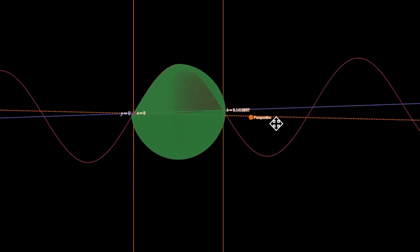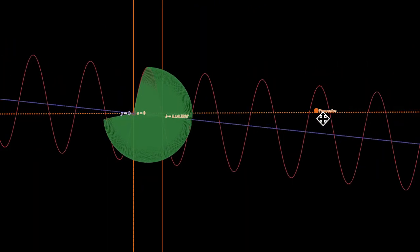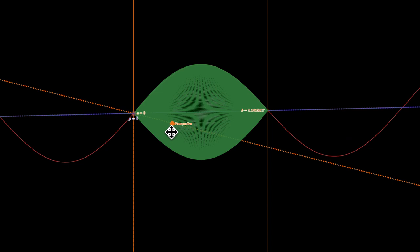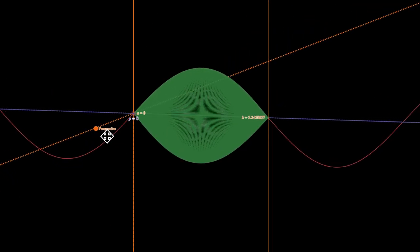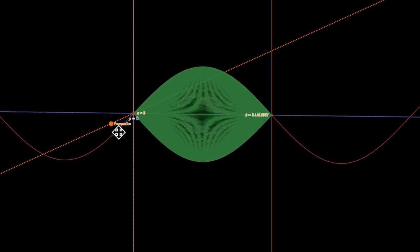If I change my perspective, you can see that it's about three-quarters of the way through. And then I can complete the revolution by going all the way through. So this would look like a spindle shape, or sometimes people call it the Goodyear blimp. You can see that it's the curve sine x that's been rotated about the x-axis.